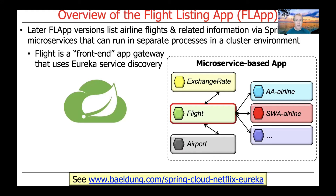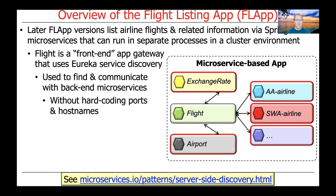There's a FLAP portion which is basically a front-end app gateway that uses the Eureka Service Discovery Framework — a framework put out by Netflix that is very useful for discovering microservices in a cluster environment. The flight portion is essentially the front-end that client applications will talk to. They'll send HTTP requests to the flight controller, which is the front-end app gateway, and it will disseminate requests to the appropriate back-end microservices. We use Eureka to find and communicate with all the back-end microservices, such as the exchange rate service, the airport service, and various airline services.